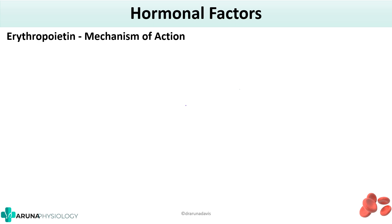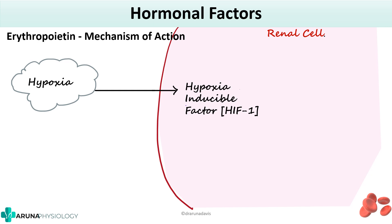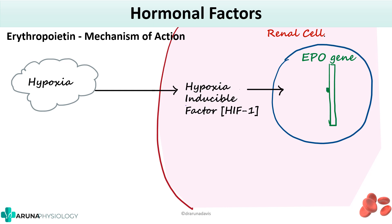The primary stimulus for erythropoietin production is hypoxia. Whenever there is hypoxia, the renal cells are also affected. So whenever there is renal cell hypoxia, there will be production of a factor called hypoxia inducible factor, otherwise called HIF1. This in turn will act on the DNA or the gene present inside the nucleus. We have an erythropoietin gene with a hormone response element, and whenever there is hypoxia, HIF1 acts on this hormone response element present on the erythropoietin gene.